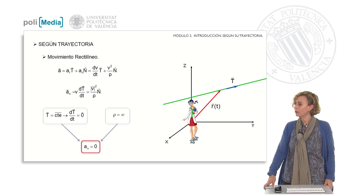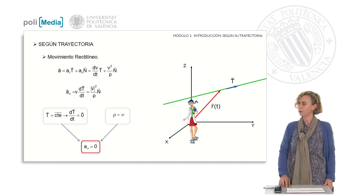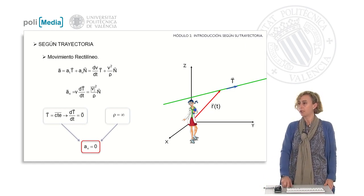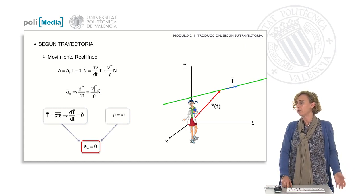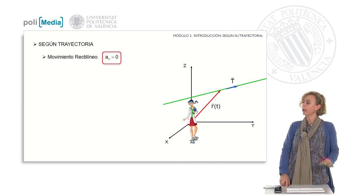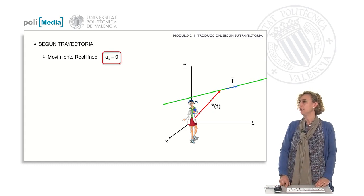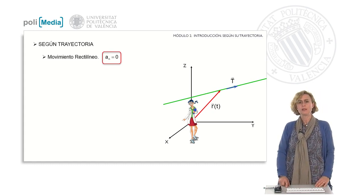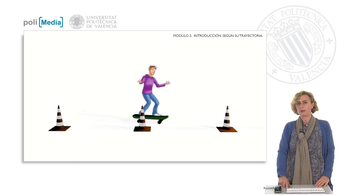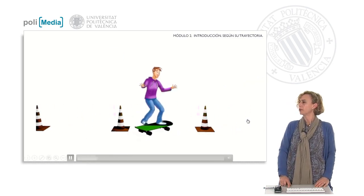The normal acceleration provides information about the change in direction experienced by the velocity vector. In rectilinear motion there is no change of direction. Therefore, in all rectilinear motion the normal acceleration is zero. Now let's observe how Jay moves.